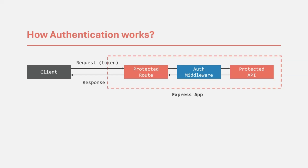In our Express application, the login and signup routes can be accessed by anyone — any user can see the login page and signup page and try to login or sign up. But apart from that, any other route which we are going to create in our Express application can be accessed only by authorized users and should not be accessible to unauthorized users. To make sure that this happens, we are going to create this auth middleware. So let's go to VS Code.